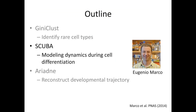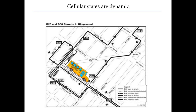Let me switch gears and talk about another method we call SCUBA. The goal is to model dynamics during cell differentiation. This work was done by a former postdoc, Eugenio Markov. The main idea is that when we think about cell states, we tend to think they are fixed. But in reality, cell states are constantly changing. Finding out the dynamics of gene expression is actually the key to understanding the functions of these cell states.